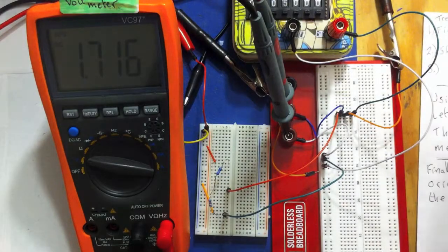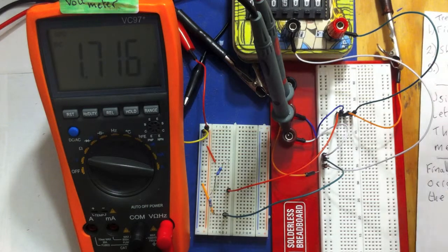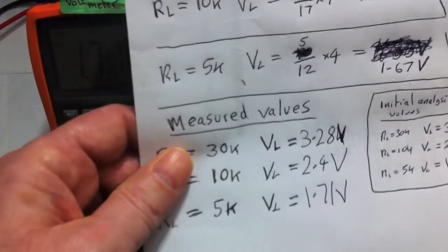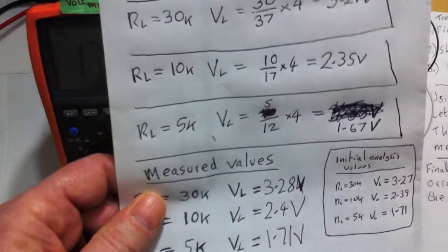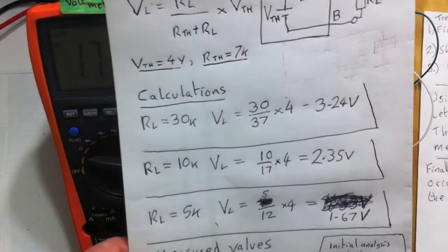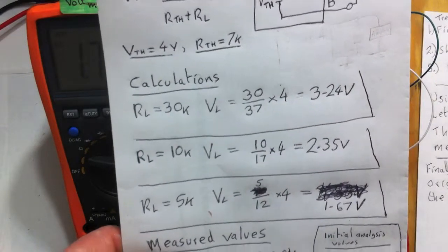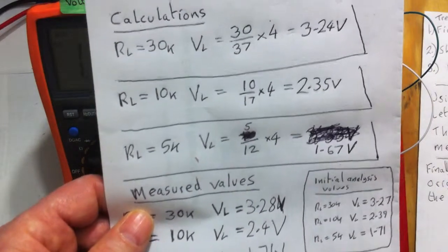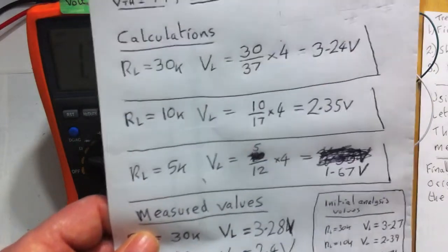So that's what we've done now. We've done everything. Let's have a quick comparison. So the actual measured value of 3.28, now our calculation after the brute force method was 3.24. So it's very similar.